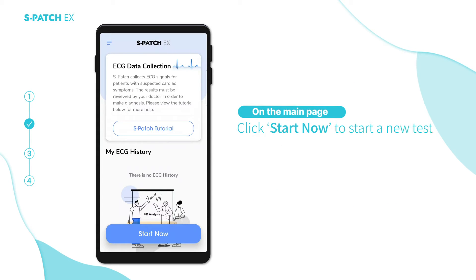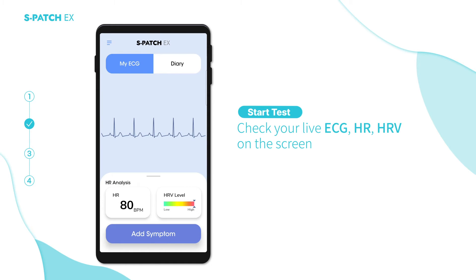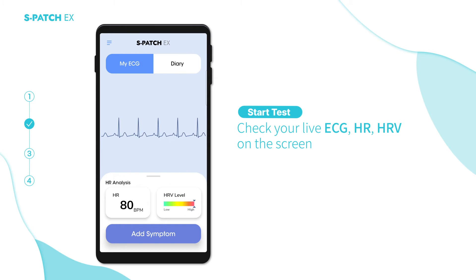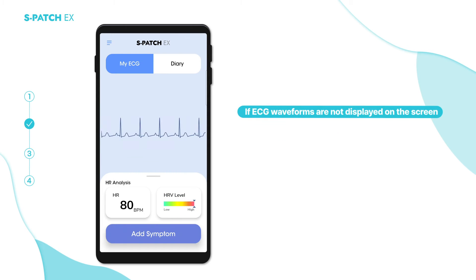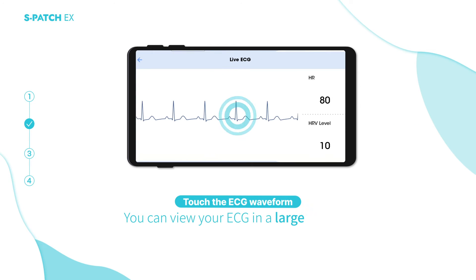On the main page, click the Start Now button to start a new test. Check the test information and click Confirm. A few seconds later, you can check the live ECG, heart rate, and HRV on the screen. If the waveforms are not displayed, please check if the S Patch is properly attached to your body.